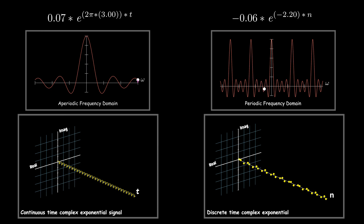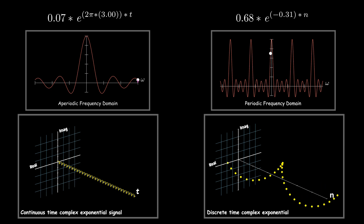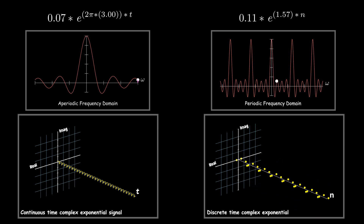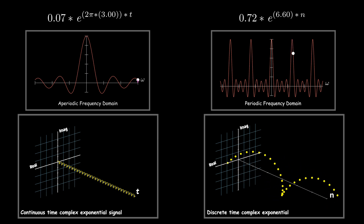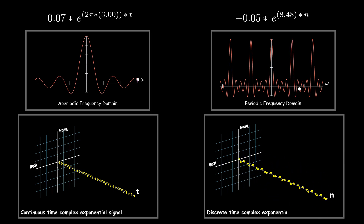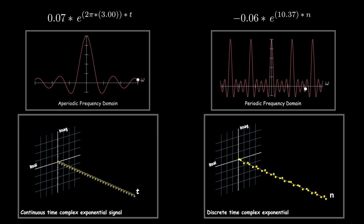The magnitude and frequency of each complex exponential is determined by the frequency domain signal, which is given by the Fourier transform. The magnitude of each complex exponential is the value of the frequency domain signal at the corresponding point, and the frequency of the complex exponential is the frequency at its corresponding point.